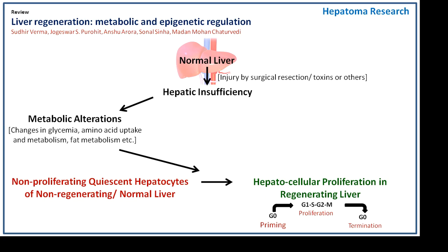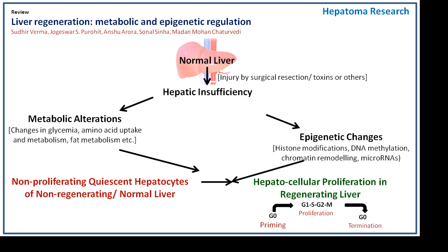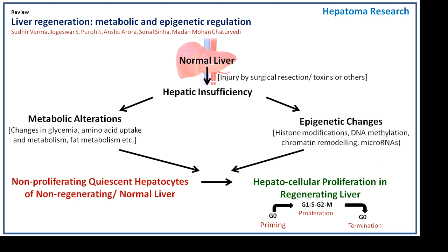On the other hand, proliferation of otherwise quiescent hepatocytes and the accompanied regeneration are regulated by transient but precisely regulated transcriptional reprogramming. This phase- and cell- and time-specific gene expression is controlled by epigenetic mechanisms such as histone modifications,